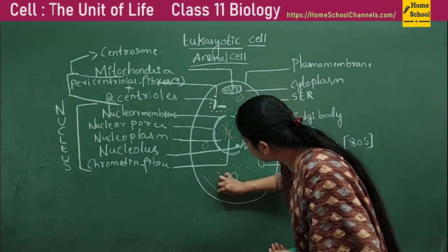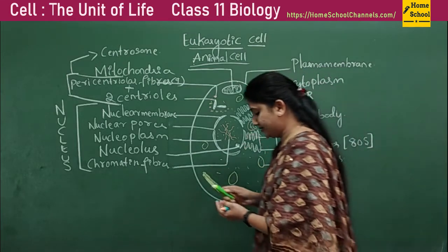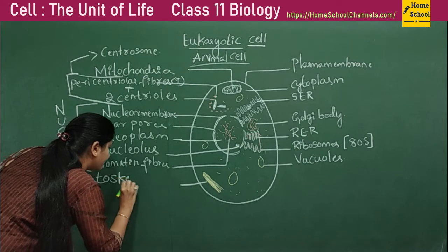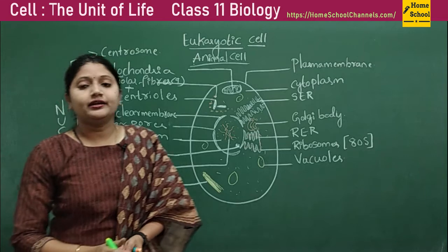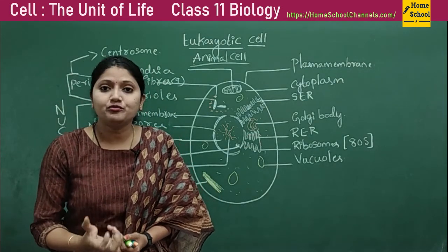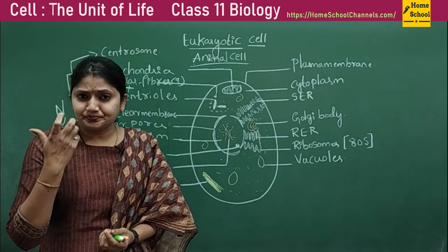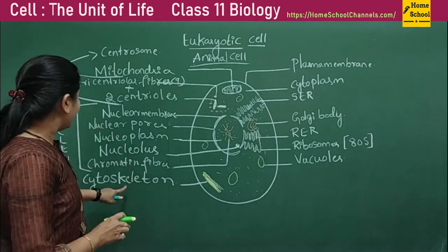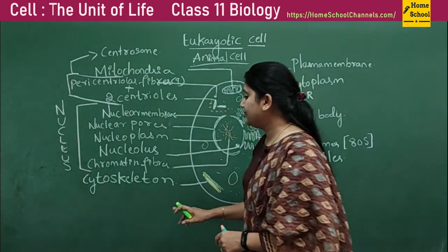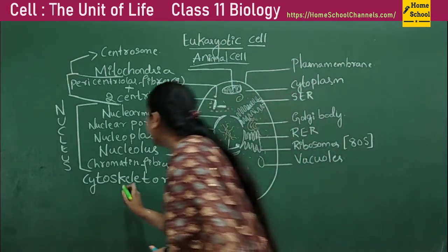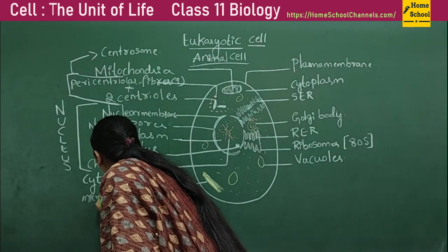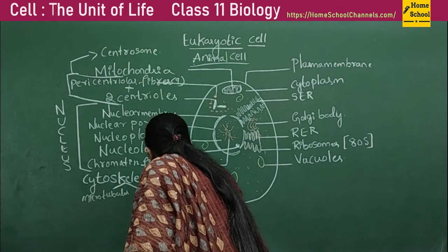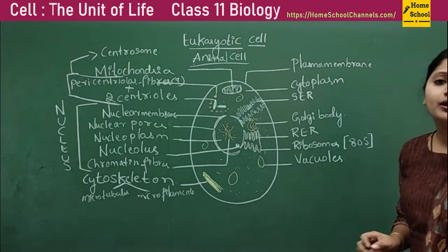The next important part is the cytoskeleton. The function of the cytoskeleton is mainly to provide strength and a framework to the cell — it gives rigidity and a proper framework. The cytoskeleton can be in two forms: it can be in the form of microtubules or microfilaments.